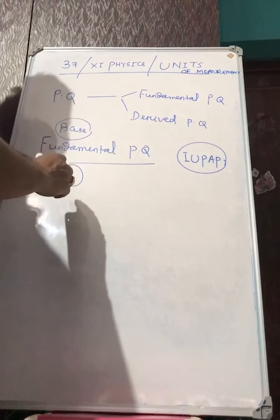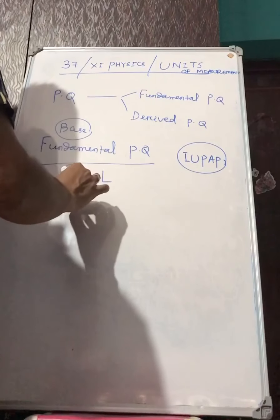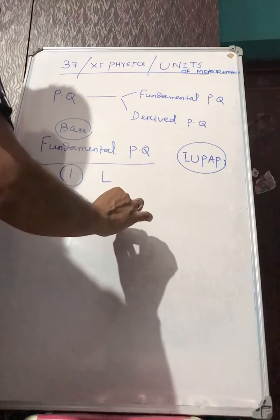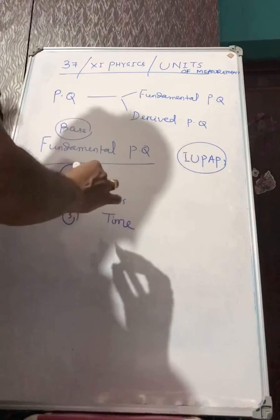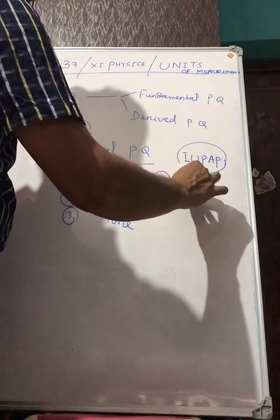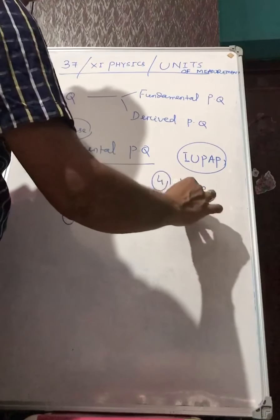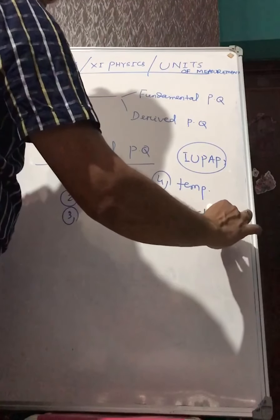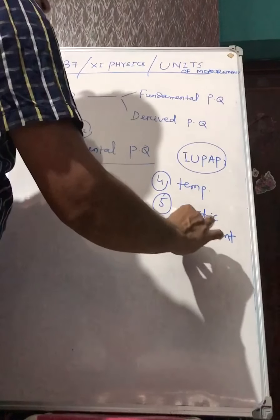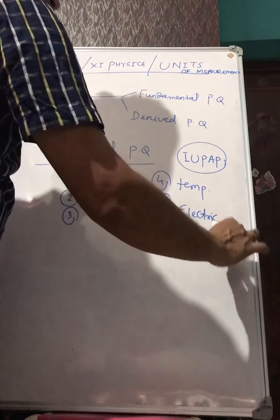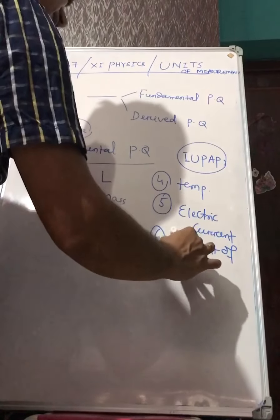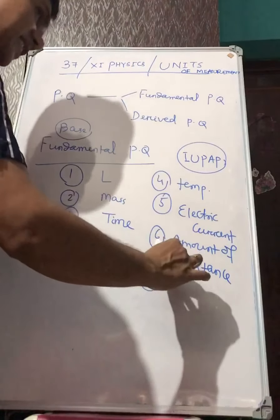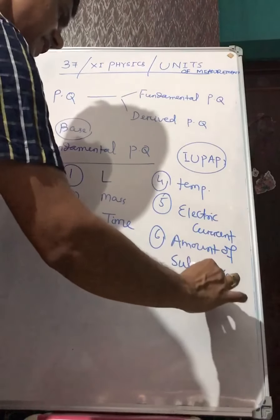What are these fundamental physical quantities? The first is length, the second is mass, the third is time — these three are very basic fundamental physical quantities. The fourth is temperature, the fifth is electric current, the sixth is amount of substance, and the seventh is luminous intensity.